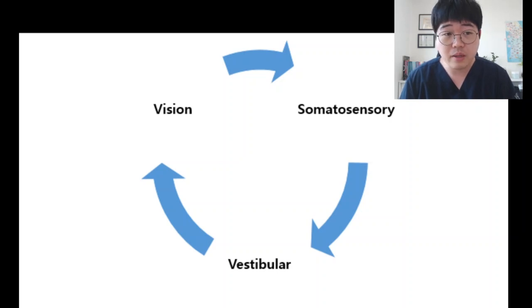There are three sensory systems to make a right balance: vision, vestibular, and somatosensory. Vision is for the eyes. When you look at something through your eyes, you can make a balance. That's the easy one.